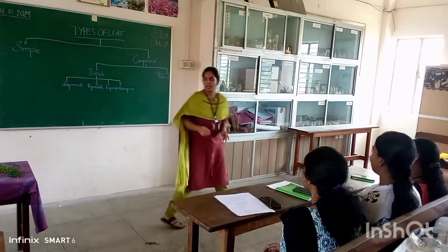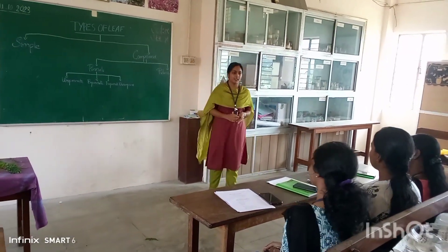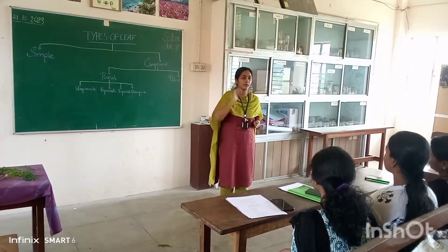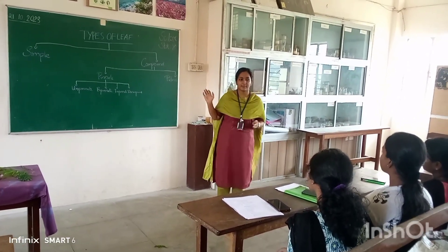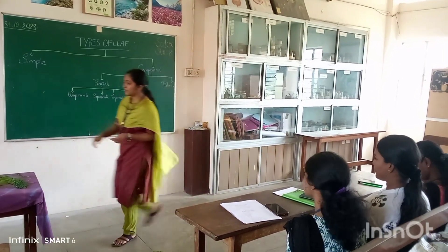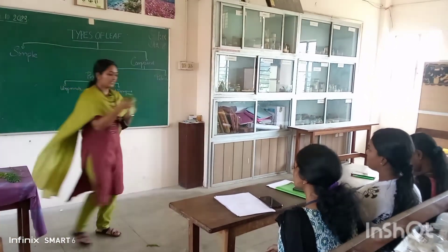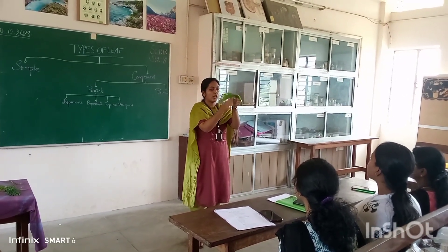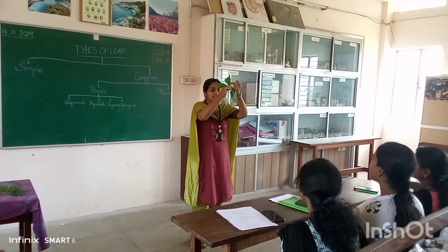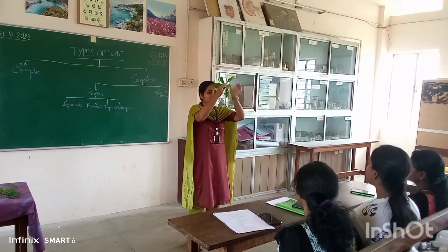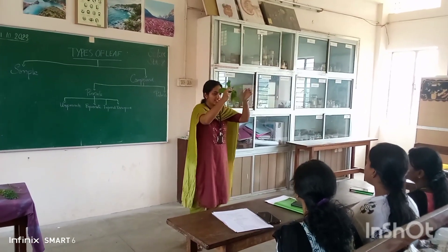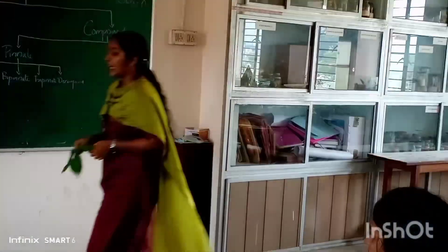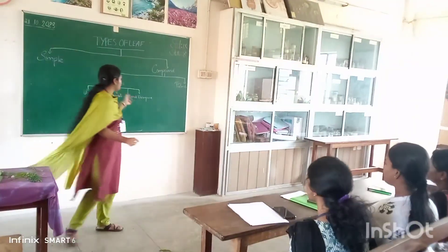Now we are discussing about palmately compound leaves. Palmately compound means the leaflets are arranged at the top of the petiole. Here is an example — you can see the petiole and the leaves are arranged at the top of the petiole.